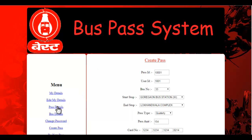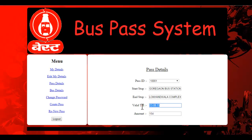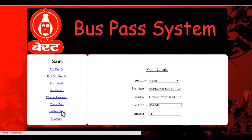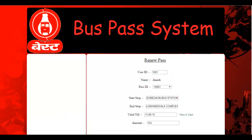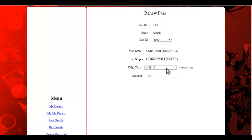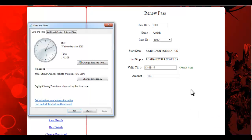This will create a pass with a specific pass ID. Let's see the pass details. Going here, you can see the new pass has been added to your account, showing the start and end stop and the valid-till date. You can then go to the renew page and select your bus pass ID, but since the pass is still valid it won't allow renewal yet.